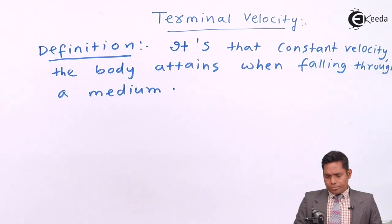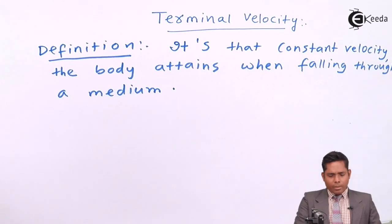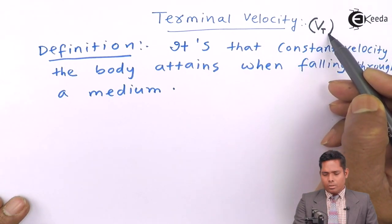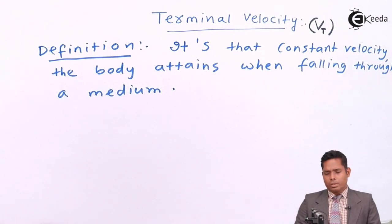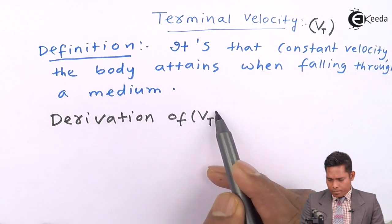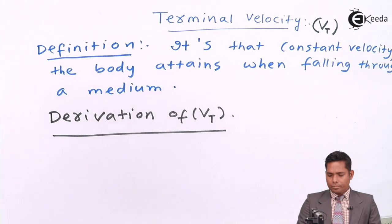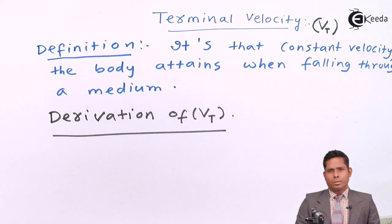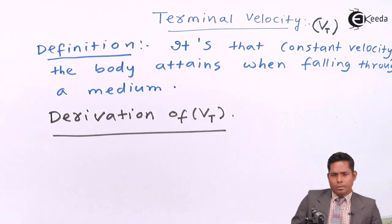Let us understand and derive the expression for terminal velocity. I represent terminal velocity as Vt. For the derivation, we will imagine a small spherical object — a sphere of mass m and radius r — moving through a fluid, say water.